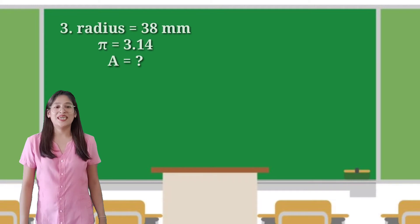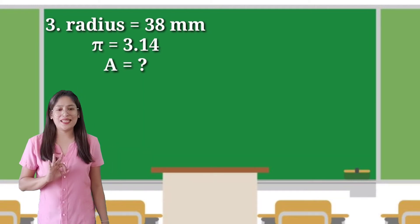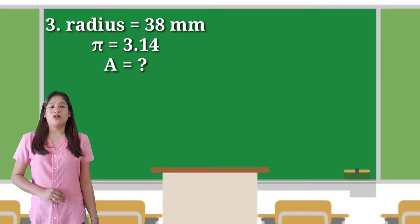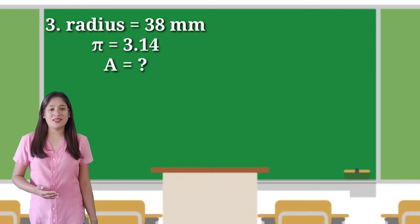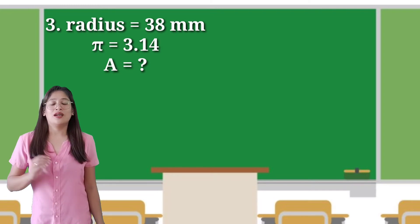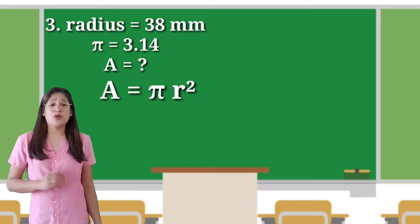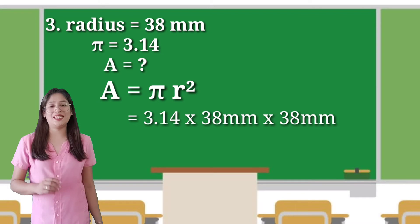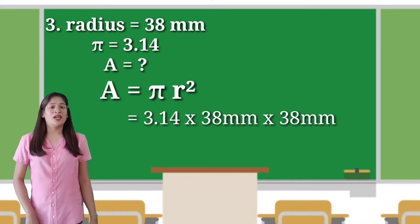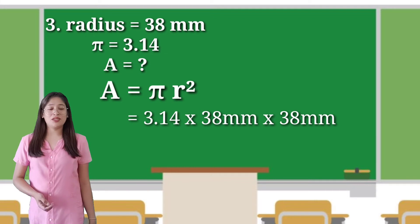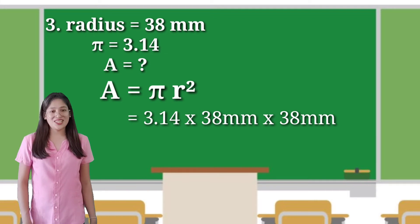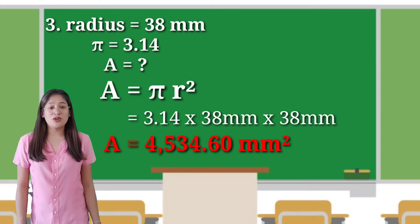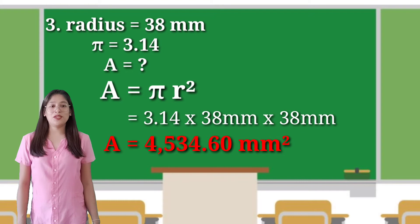In number 3, the given is a radius of 38 millimeters. We will solve it using the formula area equals pi r squared. We will substitute pi as 3.14, multiplied by 38 millimeters, and multiplied again by 38 millimeters. The answer is 4,534.16 millimeters squared.